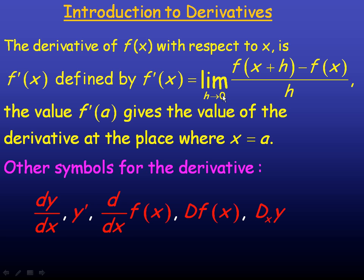As h tends towards zero, the horizontal distance between those two secant points becomes so small that the two points are almost the same point. h can't actually equal zero because if it did, this quantity would be undefined — you cannot divide by zero. So it simply says we're taking the limit as h tends towards, or gets extremely close to, zero. The limit of this difference quotient as h tends towards zero is the first principles definition of the derivative.